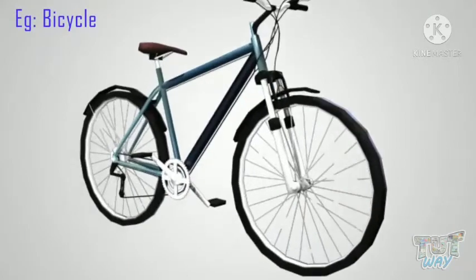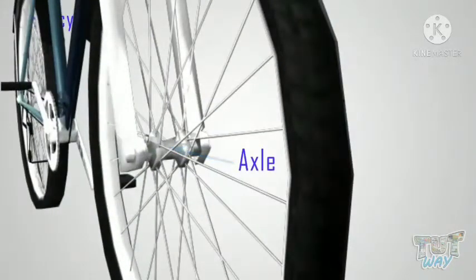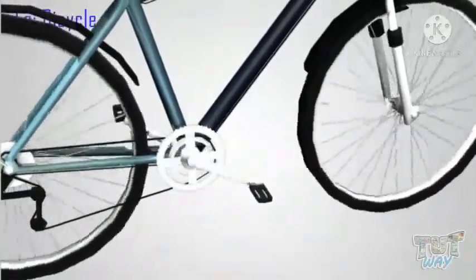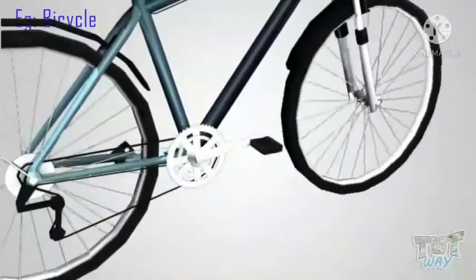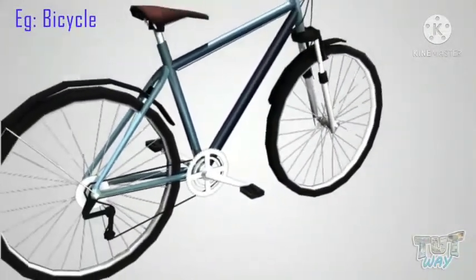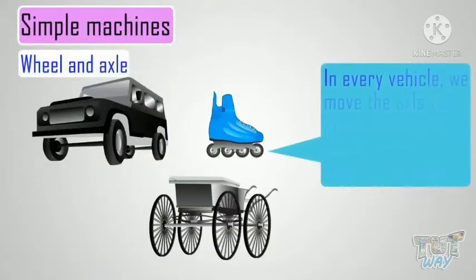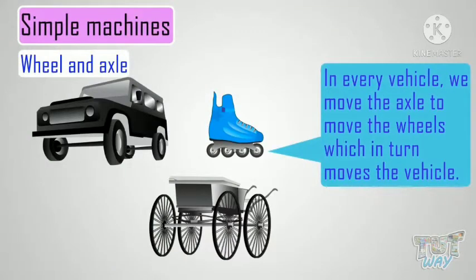Bicycle wheels are attached to the axle and we move the axle with pedals. The faster we move the axle, the faster the wheels move. In every vehicle, we move the axle to move the wheels, which in turn moves the vehicle.